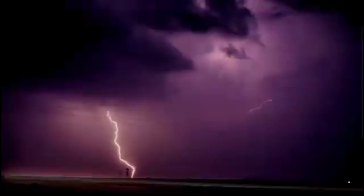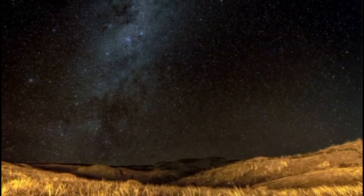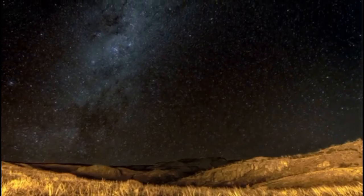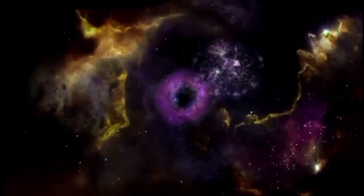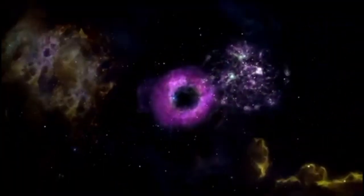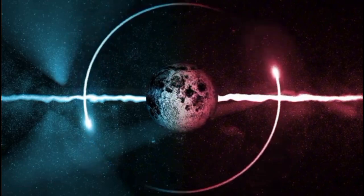Einstein's general relativity has profound implications for our understanding of the universe. He initially added a term called the cosmological constant to his equations, thinking the universe was static. But when evidence showed the universe is expanding, he called that addition his biggest blunder. An expanding universe is a key part of the Big Bang theory, which describes the origin of everything.